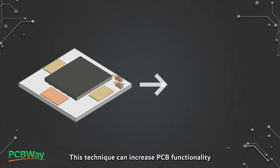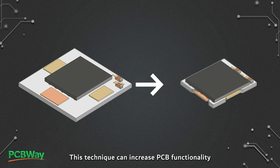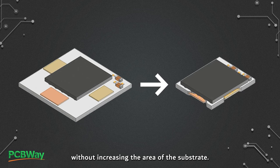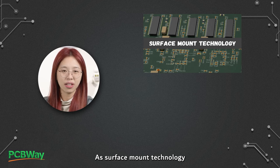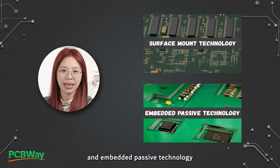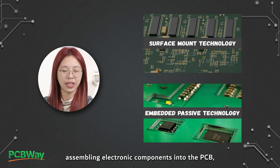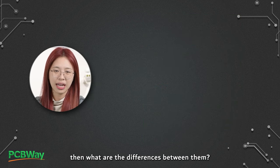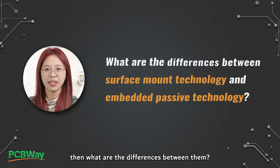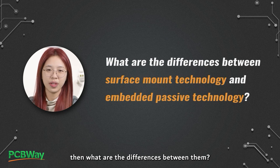This technique can increase PCB functionality without increasing the area of the substrate. As surface mount technology and Embedded Passive Technology are two methods of assembling electronic components into the PCB, what are the differences between them?